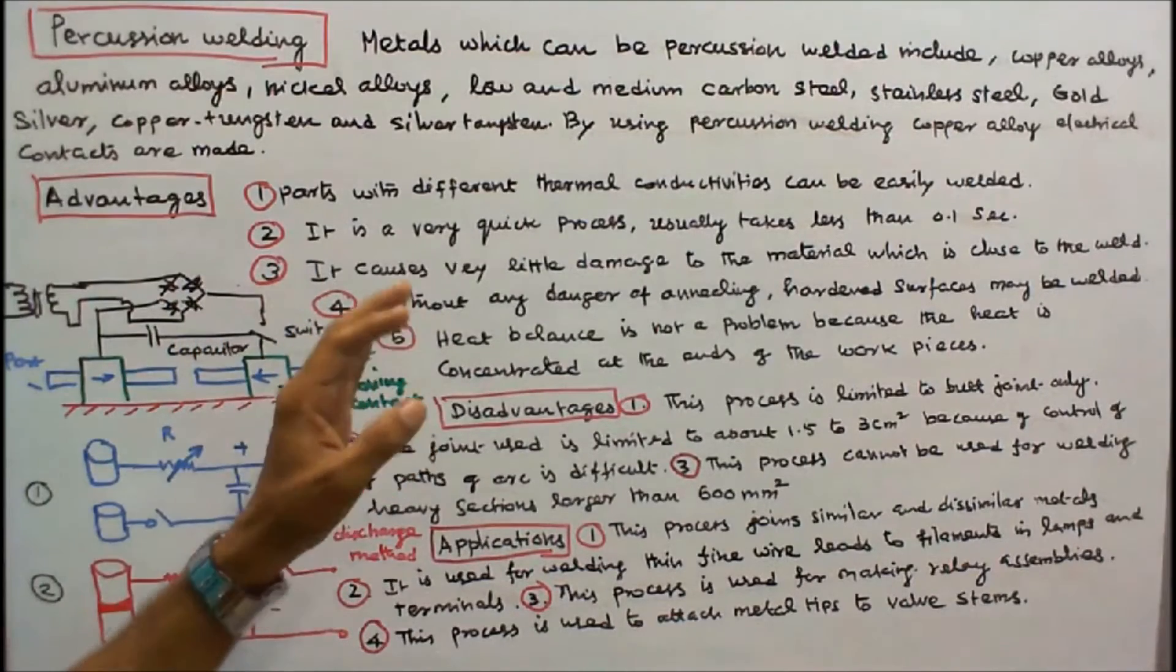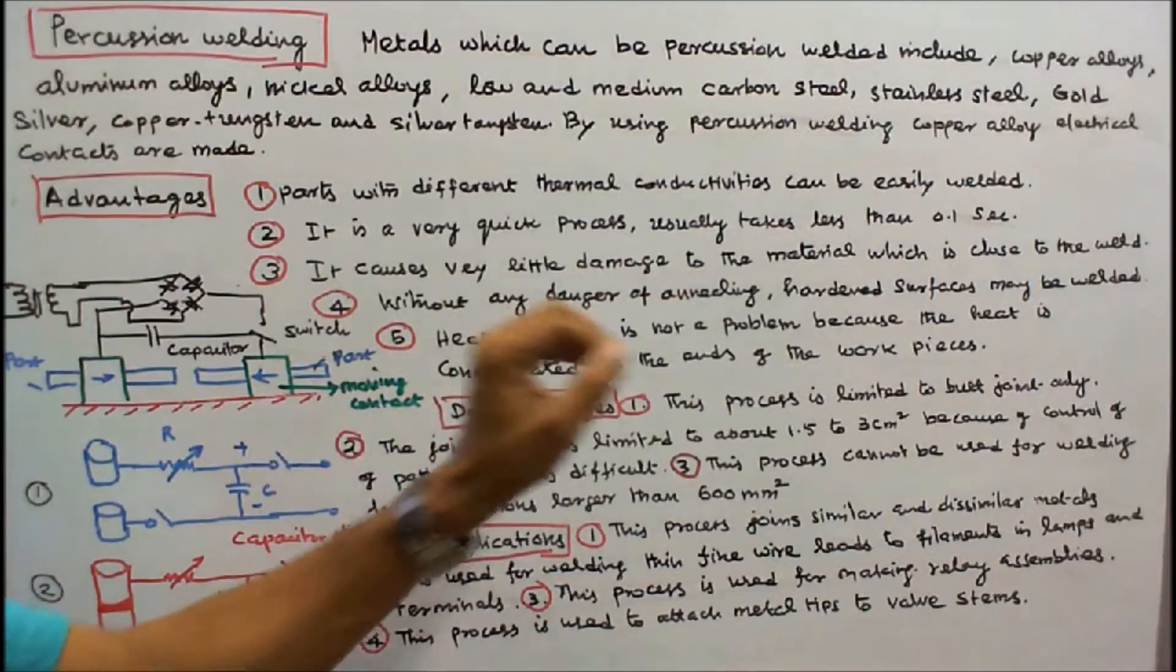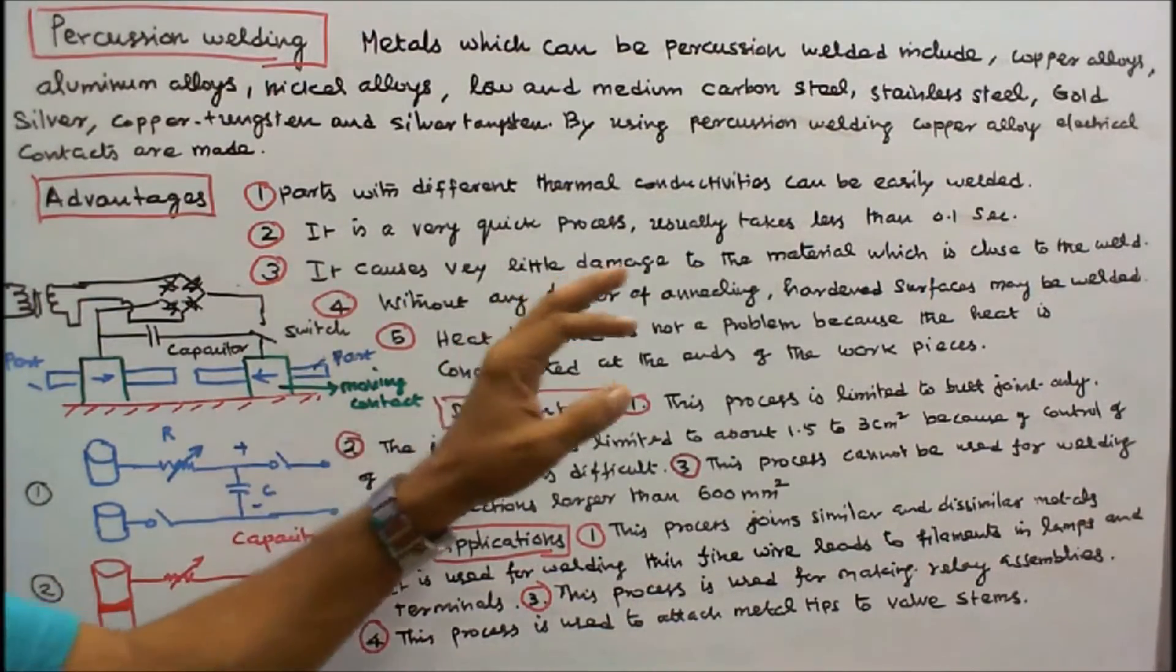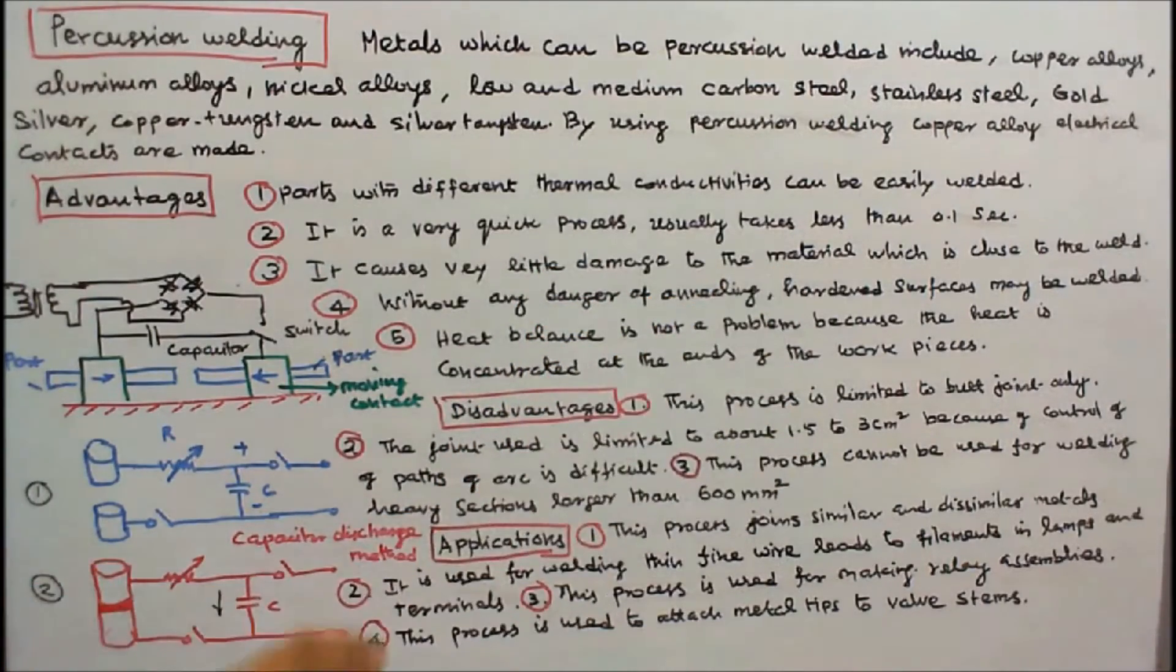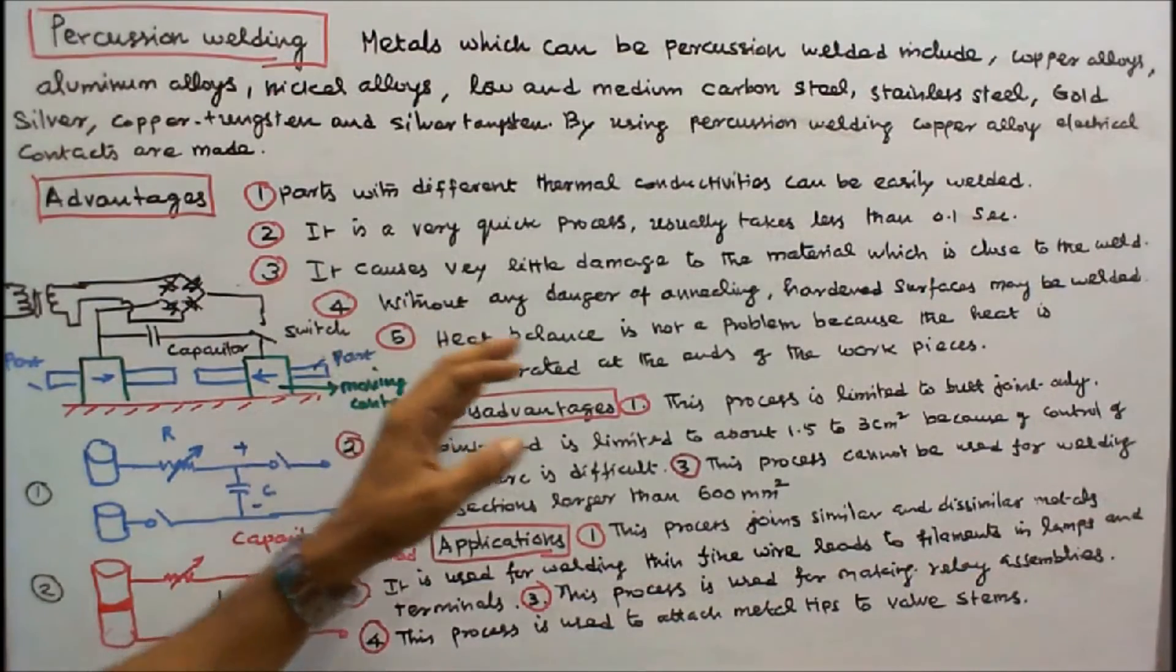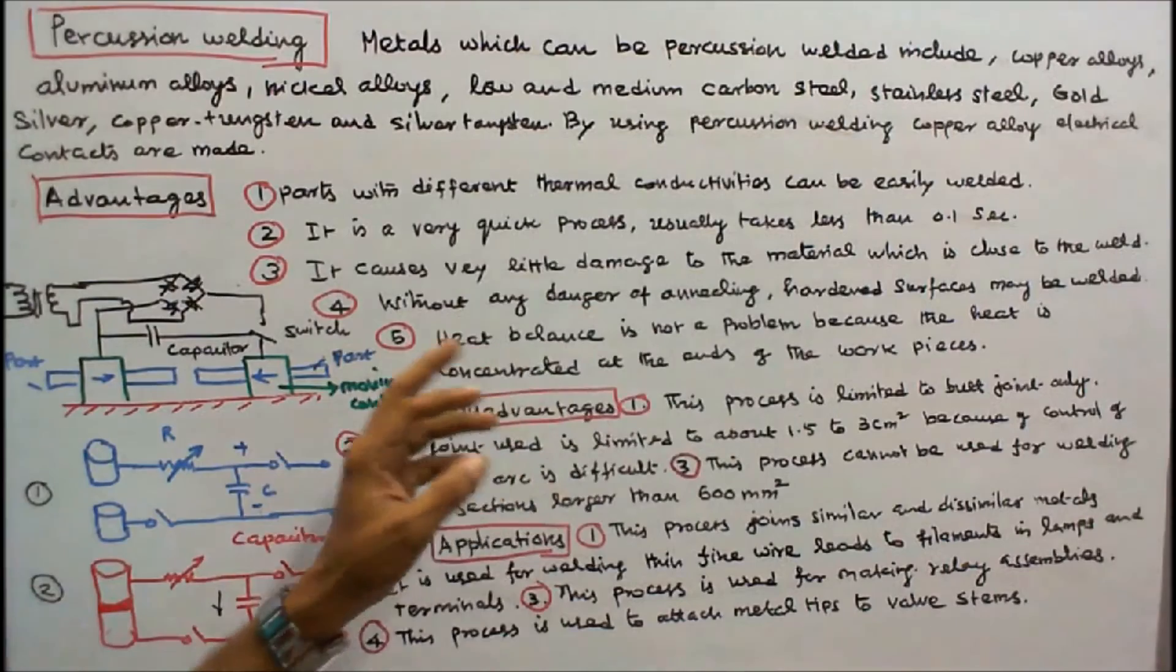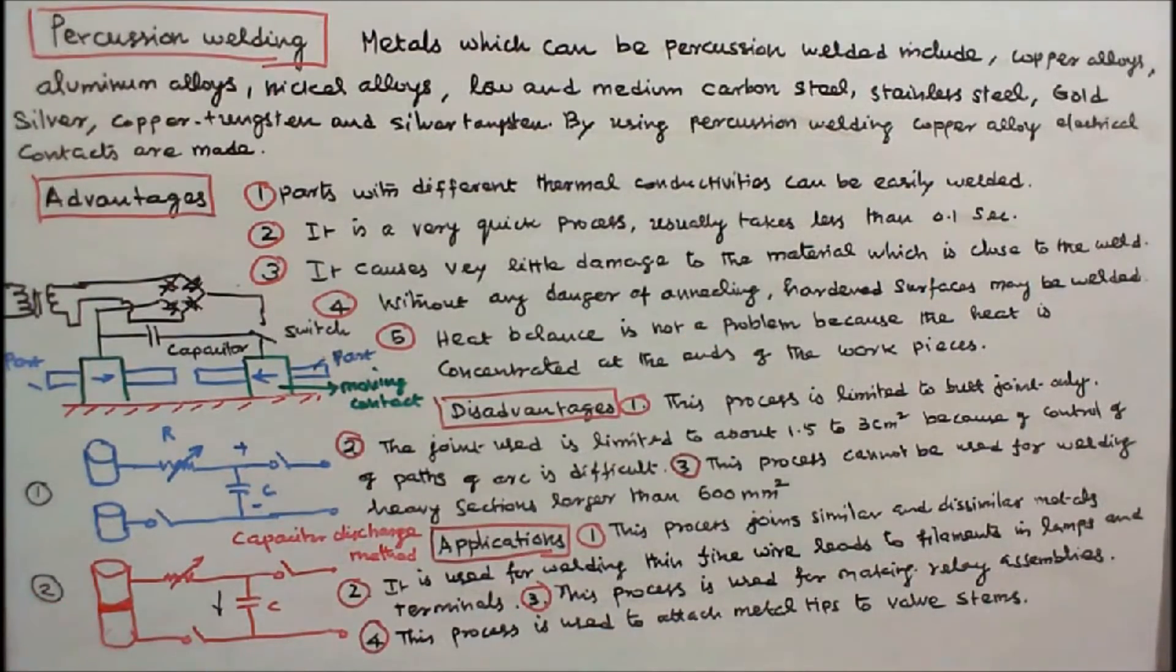Number four: without any danger of annealing, hardened surfaces may be welded. Number five: heat balance is not a problem because the heat is concentrated at the ends of the work pieces.